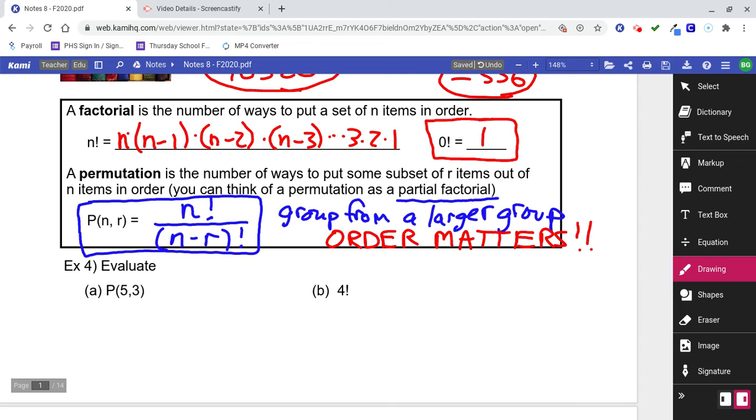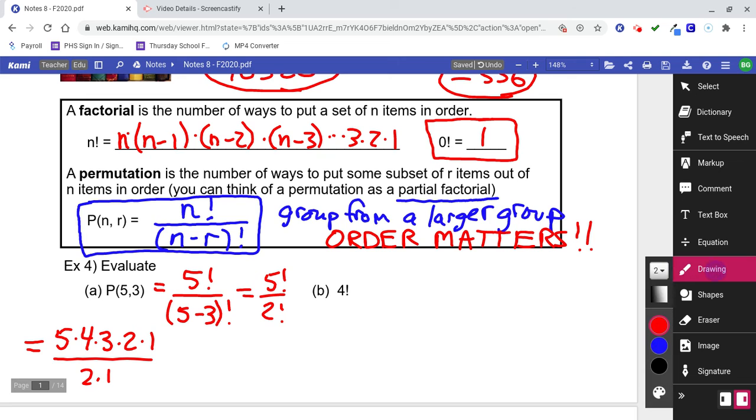Number four says evaluate. You've got a permutation with two arguments, five and three. That means we're taking a group of three items out of a larger group of five items. If I was going to use the formula, it says 5!/(5-3)!, or do the subtraction: 5!/2!. Five factorial is 5×4×3×2×1, and two factorial is 2×1. You might notice the 2 and 1 can cancel. I'm left with 5×4×3, which is 20×3, which equals 60.